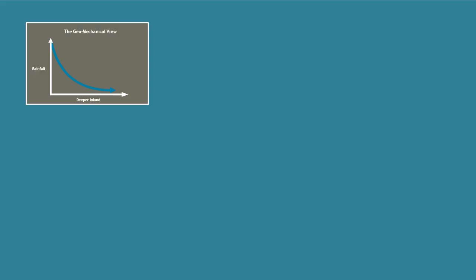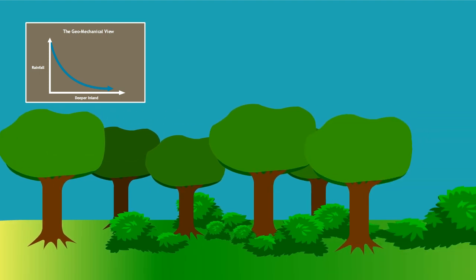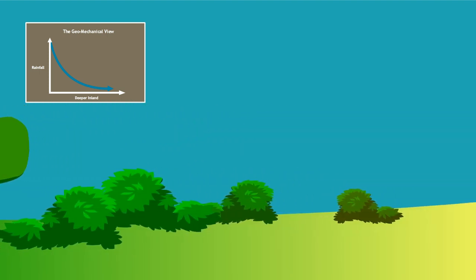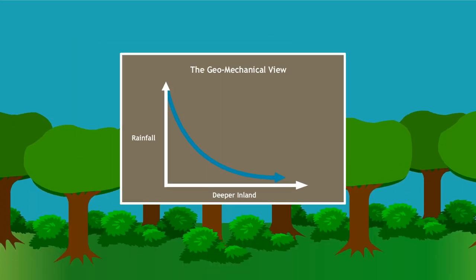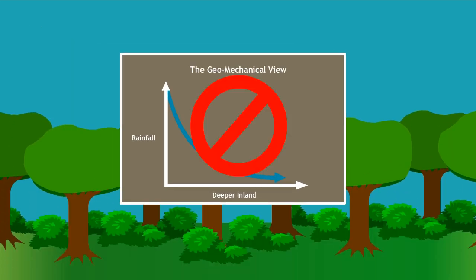If this view is true, we should expect to only see forests near the coasts and drier, more arid areas the farther inland we go. But this is not what we find. Where there are still natural forests, precipitation does not decrease with distance from the ocean.